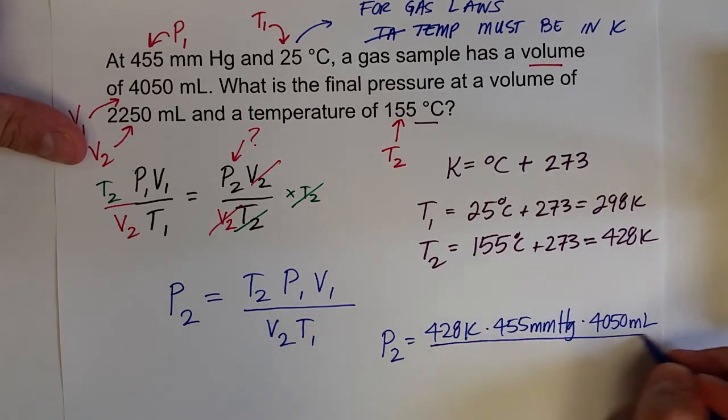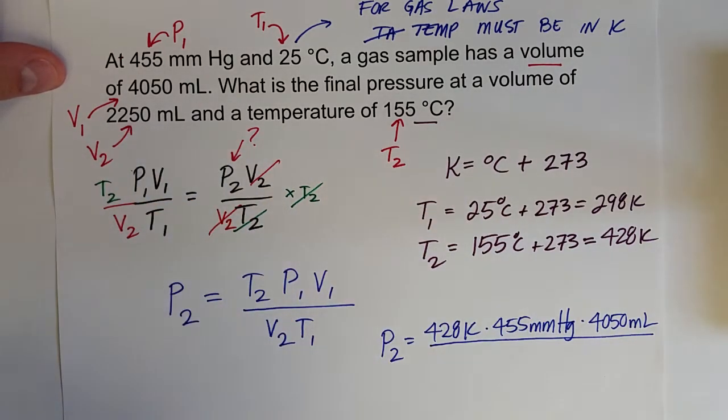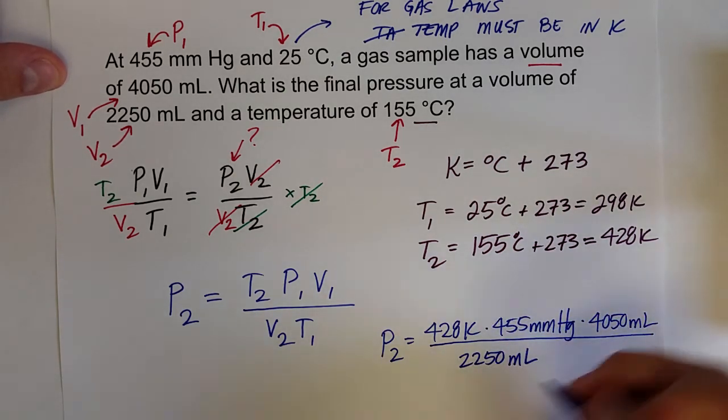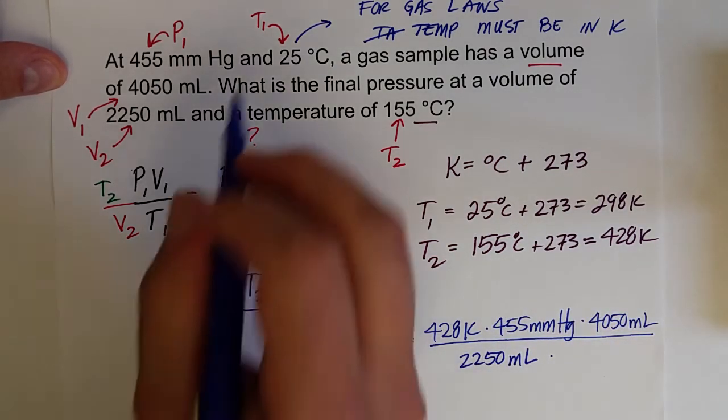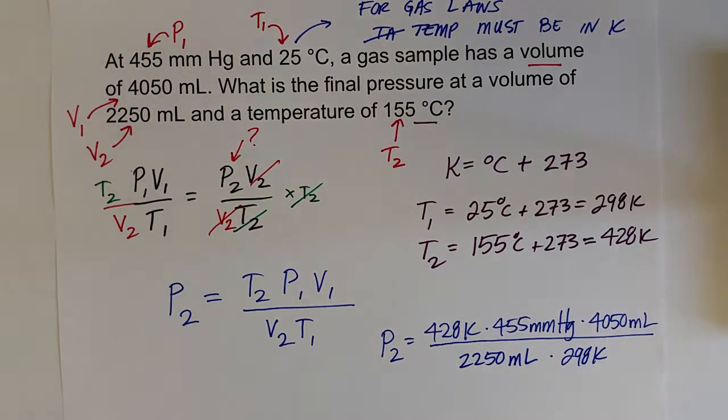all over V2, which is 2250 milliliters, times T1, which was 298 Kelvin after we converted it to Kelvin.